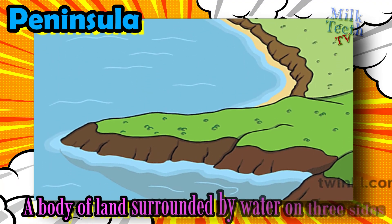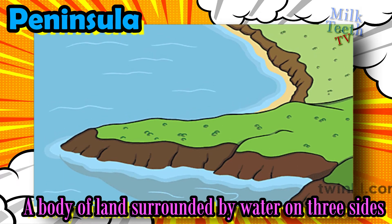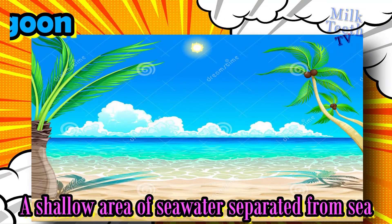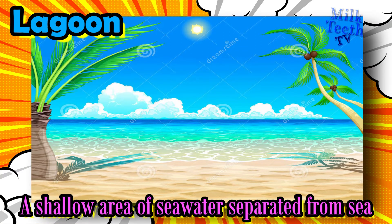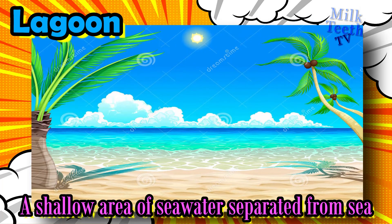Peninsula: a body of land surrounded by water on three sides. These generally form a triangular shape of land connected to the sea or ocean. Lagoon: a shallow area of sea water separated from the sea. It is one of the most beautiful landforms on Earth. The water at the lagoons becomes light blue in color and the land beneath has a sandy whitish hue.